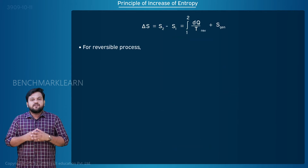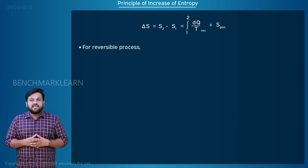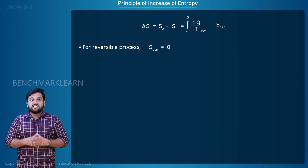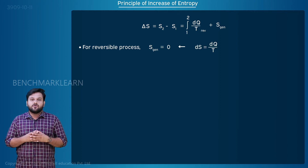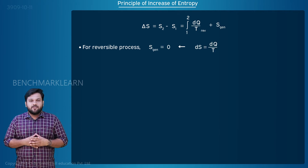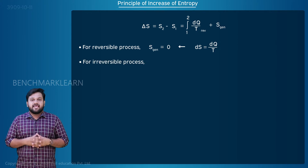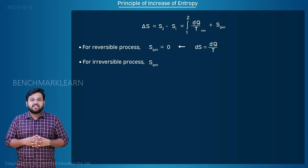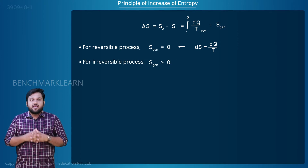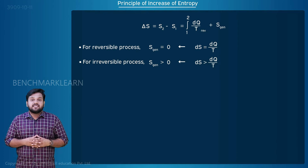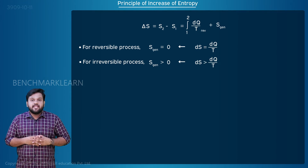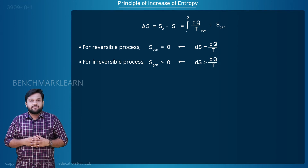For a reversible process, S_generation equals zero, since ds equals dq by T. For an irreversible process, S_generation is greater than zero, since ds is greater than dq by T.